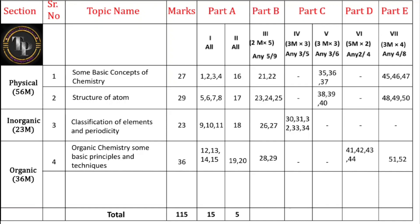To summarize the total marks: 15 marks from MCQs, 5 marks from fill in the blanks, 10 marks from Part B (five 2-mark questions), 9 marks from inorganic three-mark questions, 9 marks from physical chemistry three-mark questions, 10 marks from organic five-mark questions, and 12 marks from Part E numericals (four 3-mark problems). That totals 70 marks; the question paper is of 115 marks and you answer for 70.